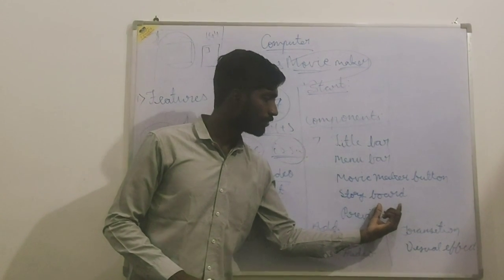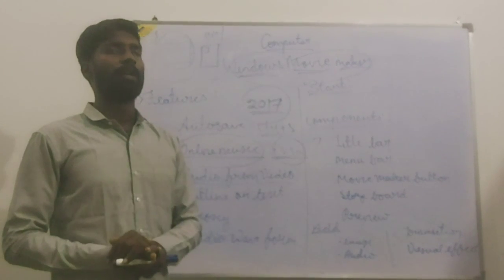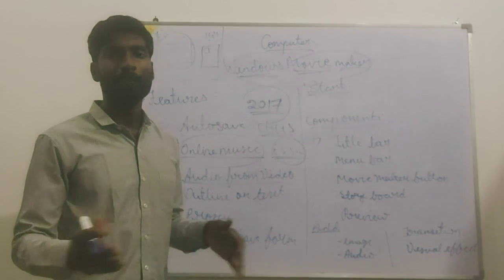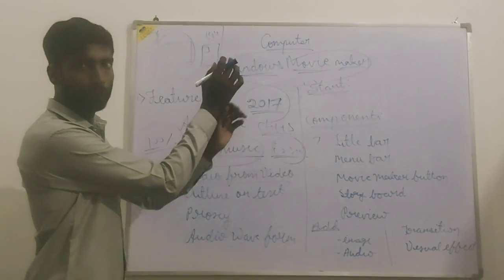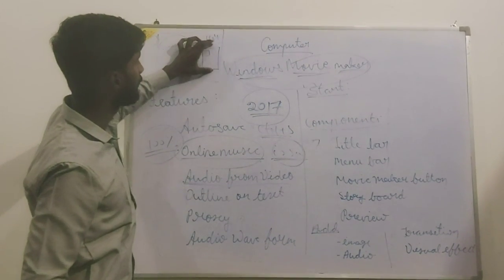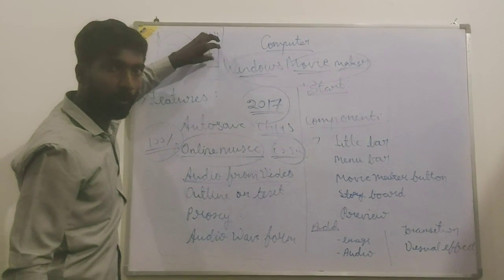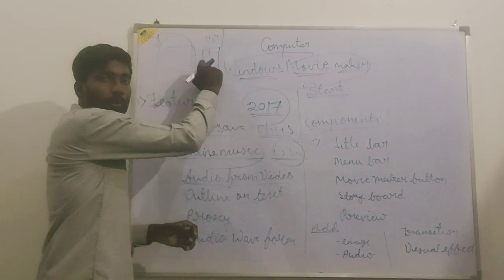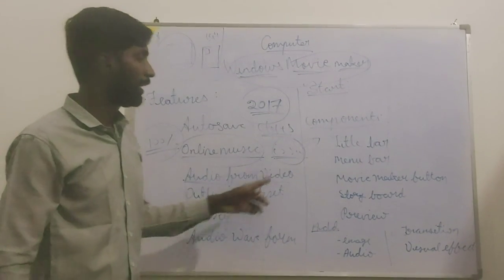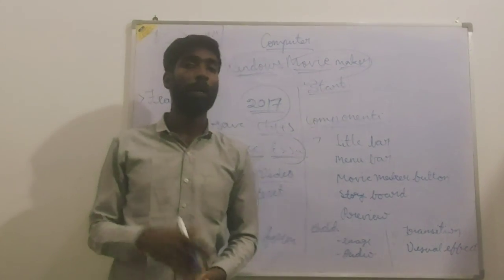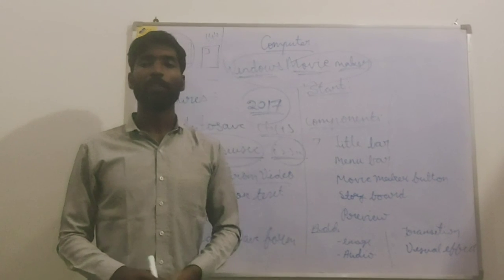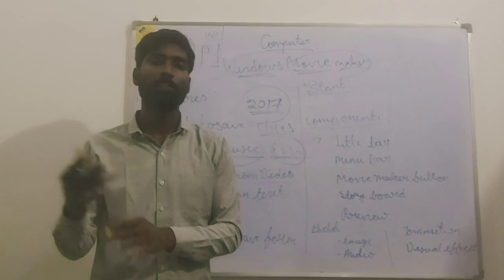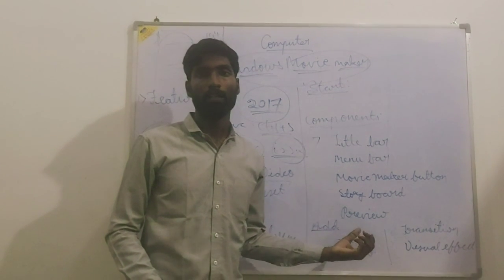The next component is the Storyboard. If I want to make a video clip with 10 pictures, two audio files, two music files, and one video, I import all those files into the Storyboard. That is where all the files you are going to use for editing are kept. The last component is Preview — after editing your video, you click Play to check whether it is working correctly and what modifications still need to be done.